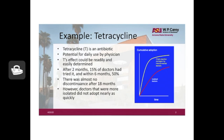Tetracycline was a broadly useful new medicine. It was successful in the market — after two months, 15% of doctors had tried it, and within six months, 50% of all doctors had. There was almost no discontinuance of usage after 18 months. However, if you look at the graph on the right, it shows two different groups of doctors. The yellow curve represents the chain reaction contagion by interconnected doctors, and then the red line shows the adoption rate amongst isolated doctors.